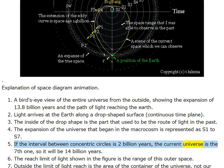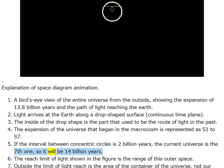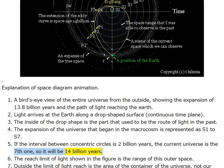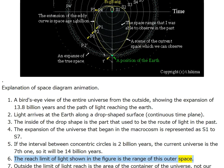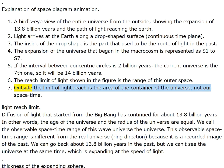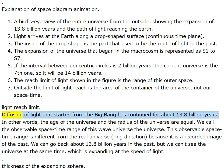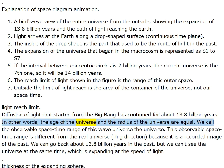The expansion of the universe is represented as S1 to S7. If the interval between concentric circles is two billion years, the current universe is the seventh one — 14 billion years. Outside the limit of light reach is the area of the container of the universe, not our space-time. The diffusion of light that started from the big bang has continued about 13.8 billion years, so the age of the universe and the radius of the universe are equal.